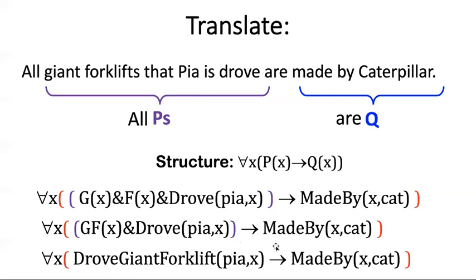And therefore, if that's the case, then x has to be made by caterpillar. Or maybe you just made this one property, which is drove a giant forklift driven by Pia and x has that property.